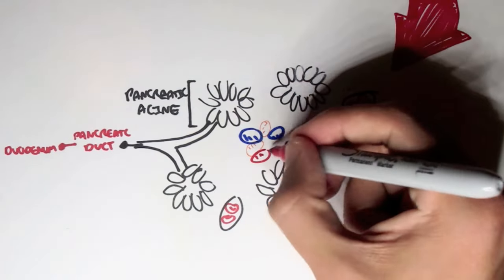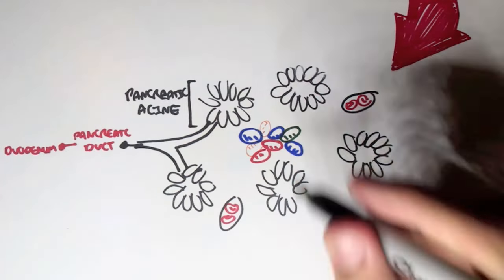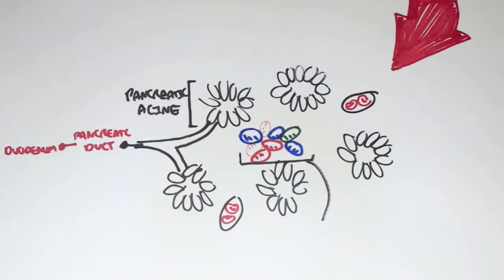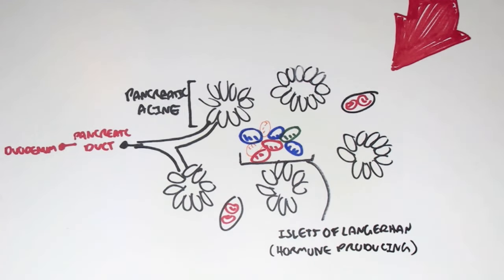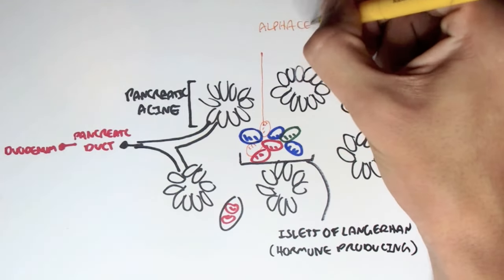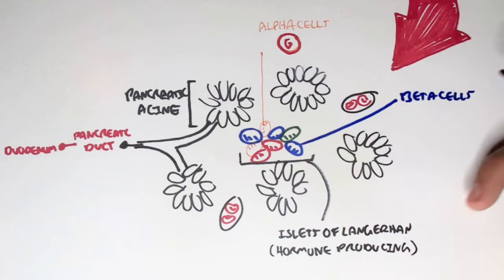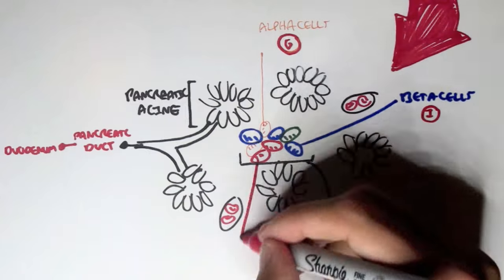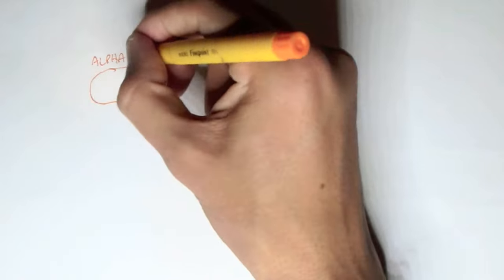But what we're concentrating on are the hormones. And these are secreted by cells which form clusters around the pancreas. And these clusters, or islets, are known as the islets of Langerhans. And within the islets of Langerhans are the hormone-producing cells. And there are many types of hormone-producing cells, but we're mainly looking at three. And these are the alpha cells, which secretes glucagon, the beta cells, which secrete insulin, and the delta cells.